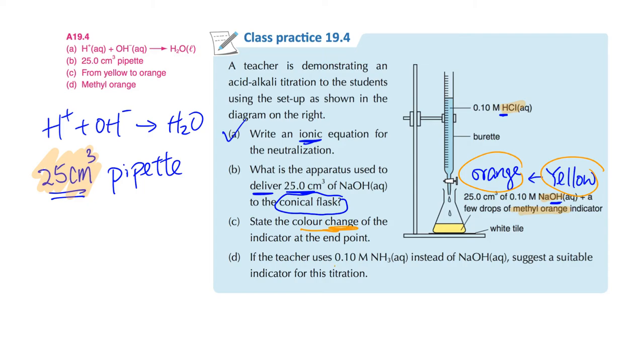If you're using 0.1M NH3 instead of NaOH, so if you use NH3, that is a weak base. Strong acid, weak base, that means more close to the acidic part, the end point should be smaller than pH 7. So can we use methyl orange for that? Yes, we can keep using methyl orange. So this one will be all right.